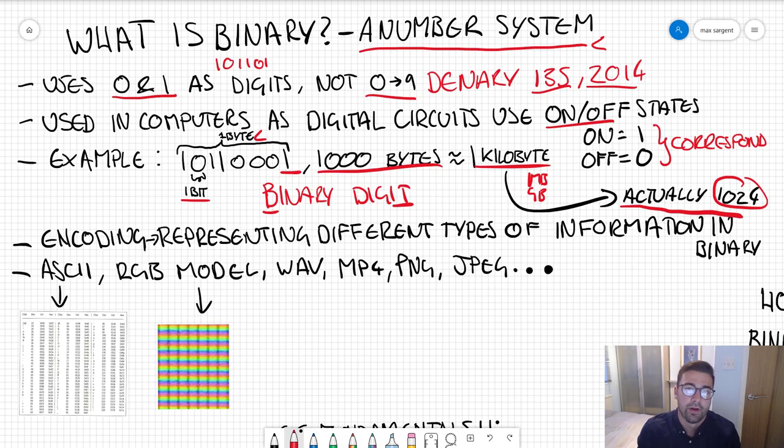I'll tell you why. It's through a very smart process called encoding. Encoding is so important. It is how we represent different types of information just using binary. Here's some different encoding systems: ASCII, this is a character encoding system, and RGB, which computer screens and phone screens use to represent pixels in different colors.